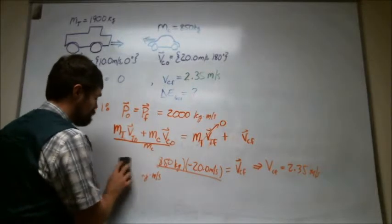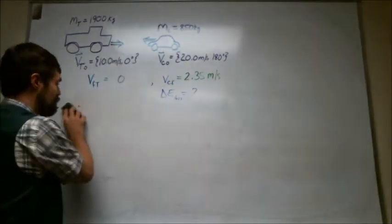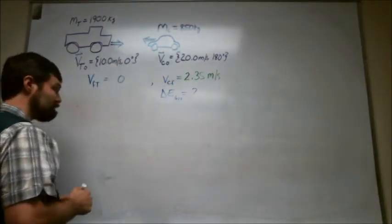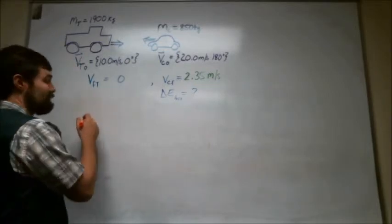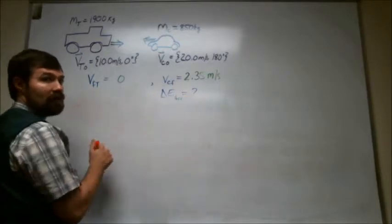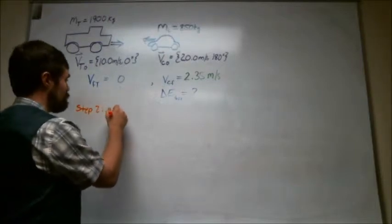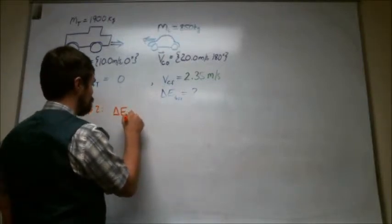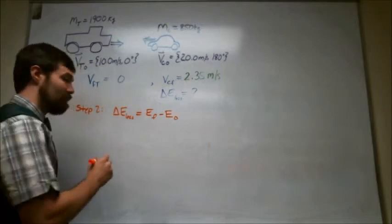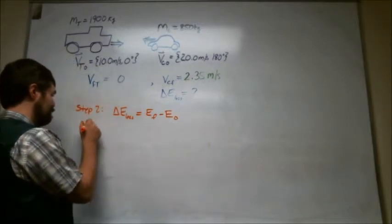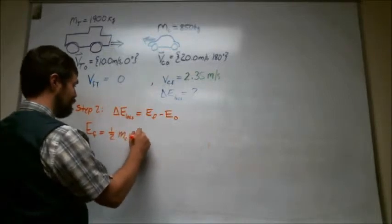So now we can actually do the second step, which is to figure out the lost energy. So in step two, what we end up doing is calculating the initial energy and the final energy. And then subtracting the two and that gets us our lost energy. So step two is delta E loss is E final minus E initial.